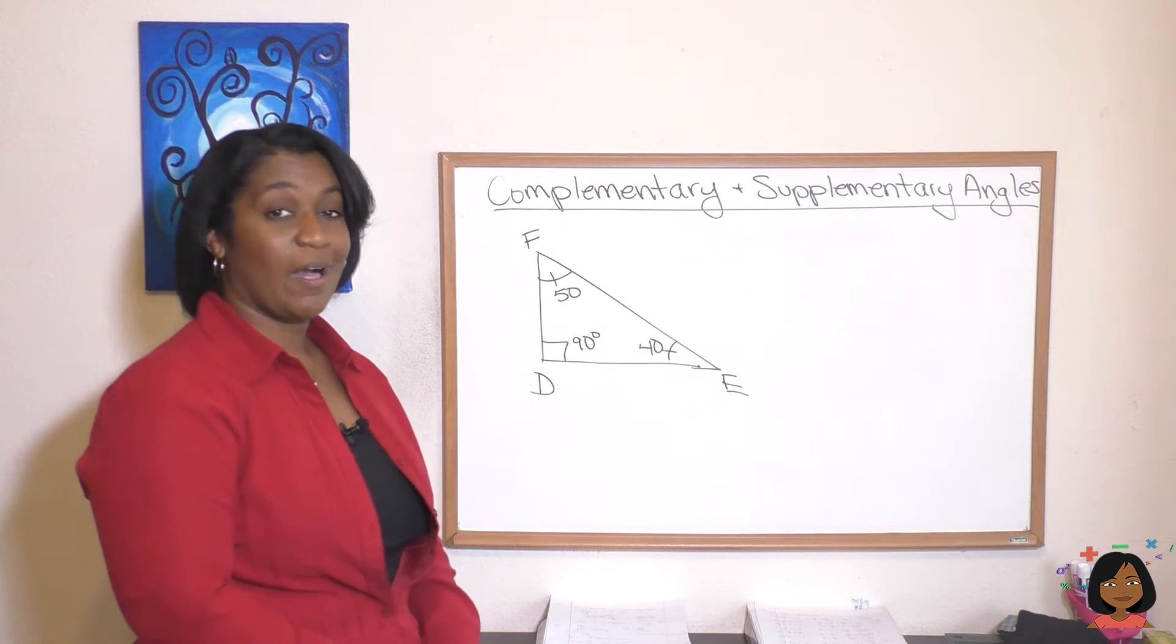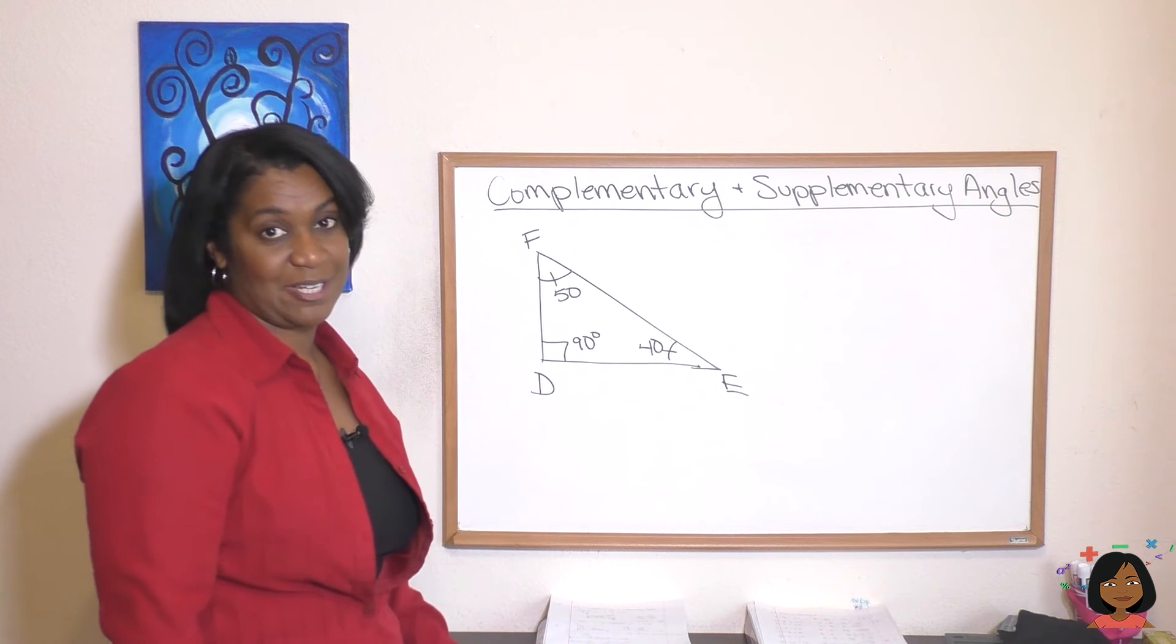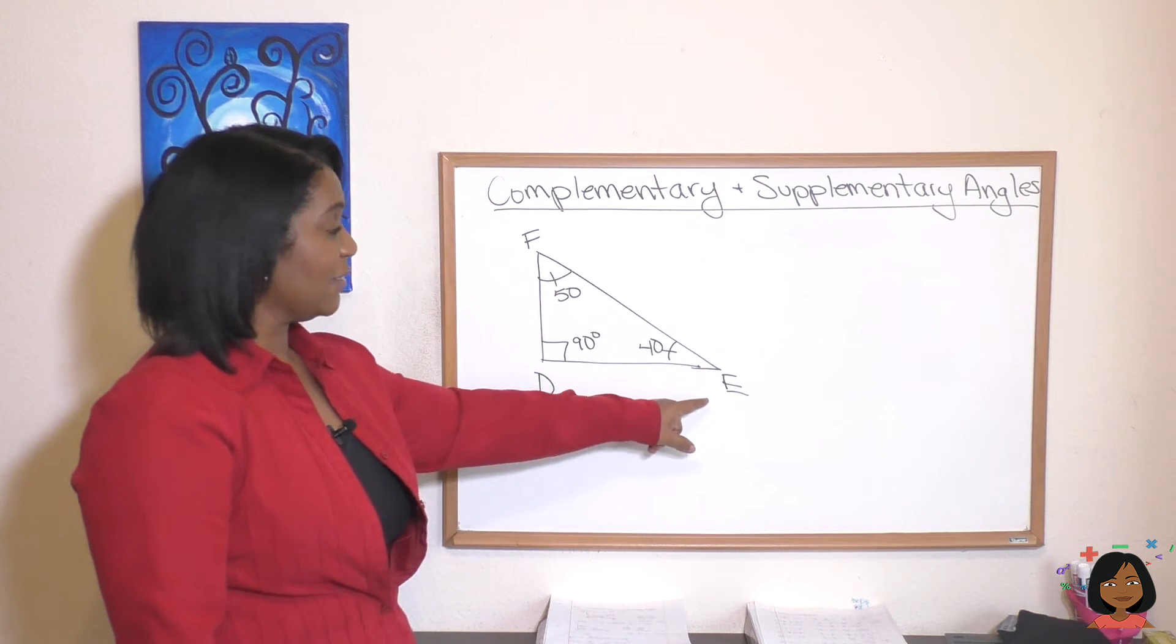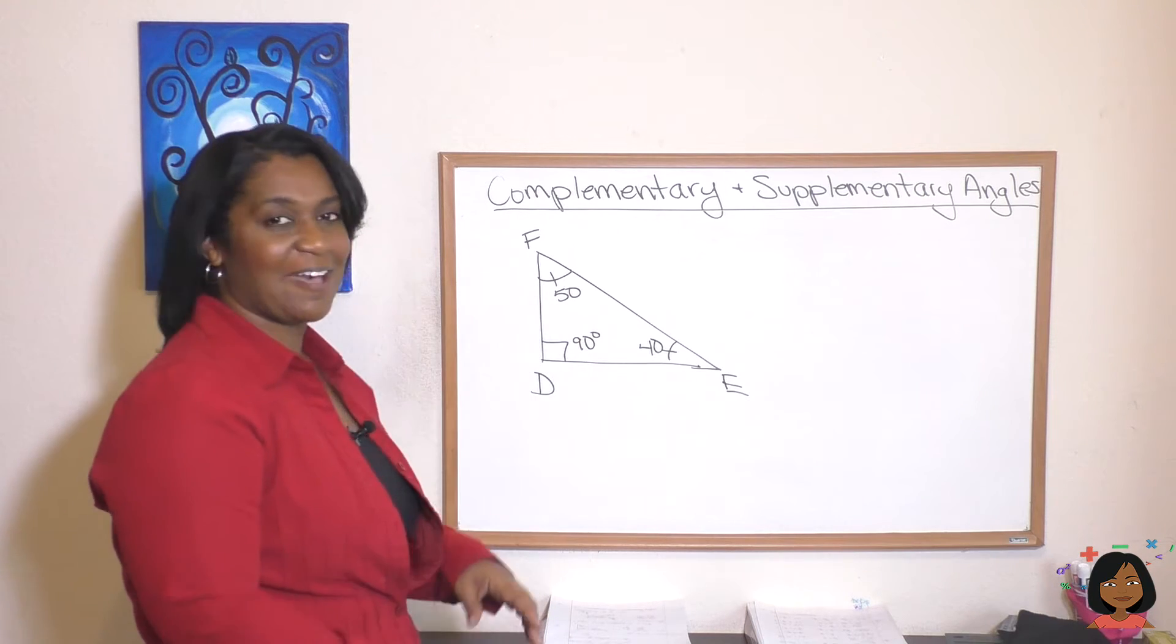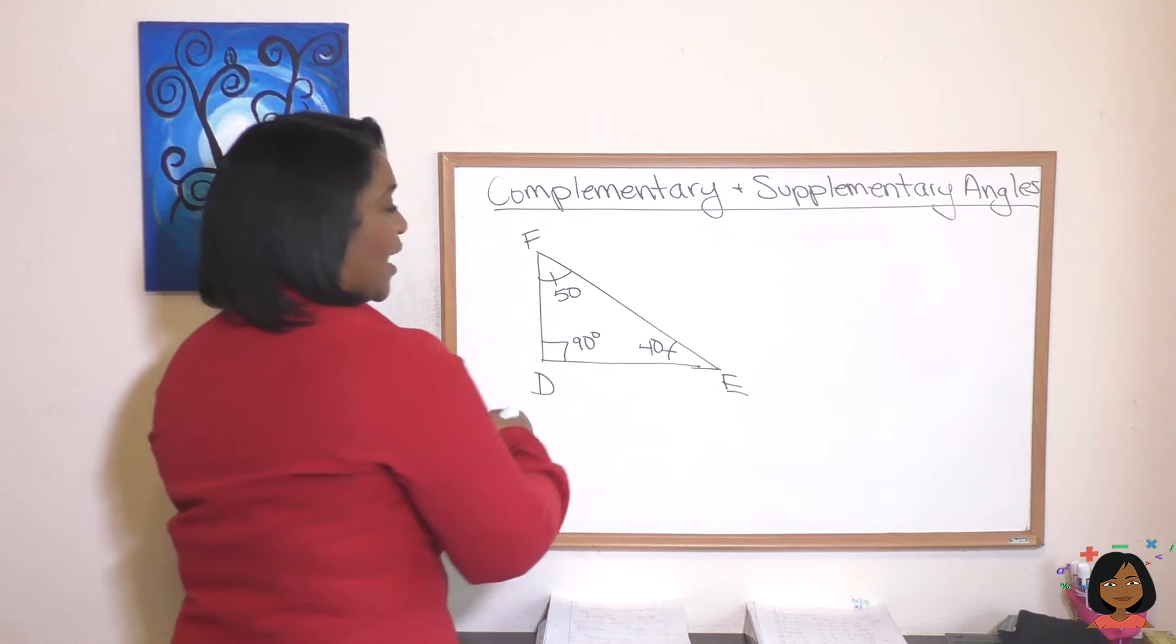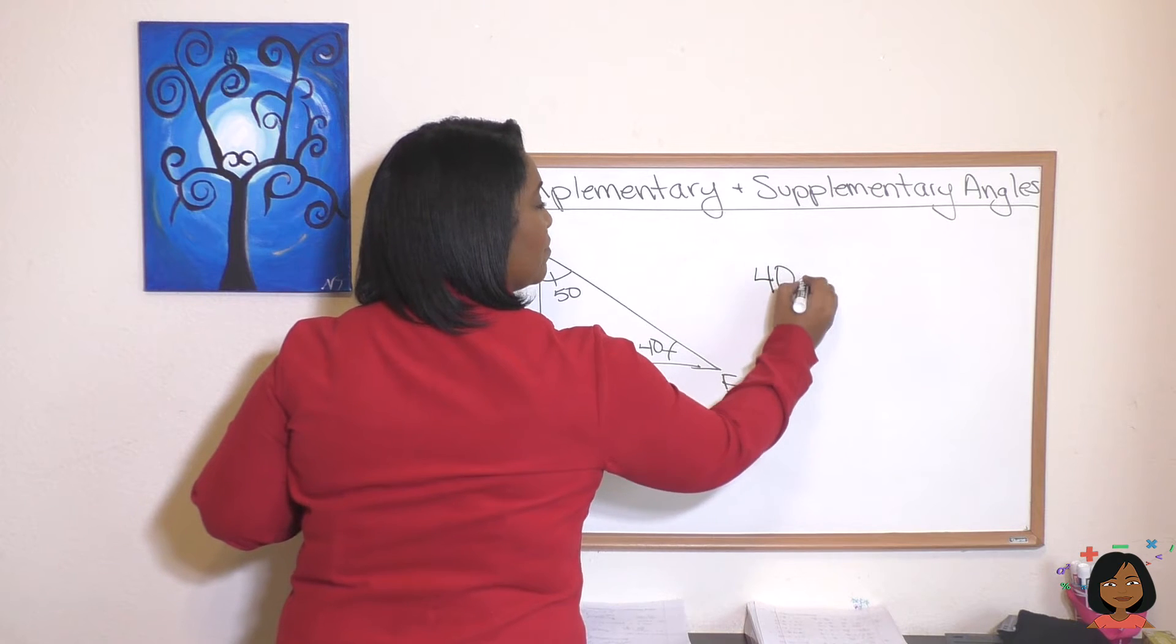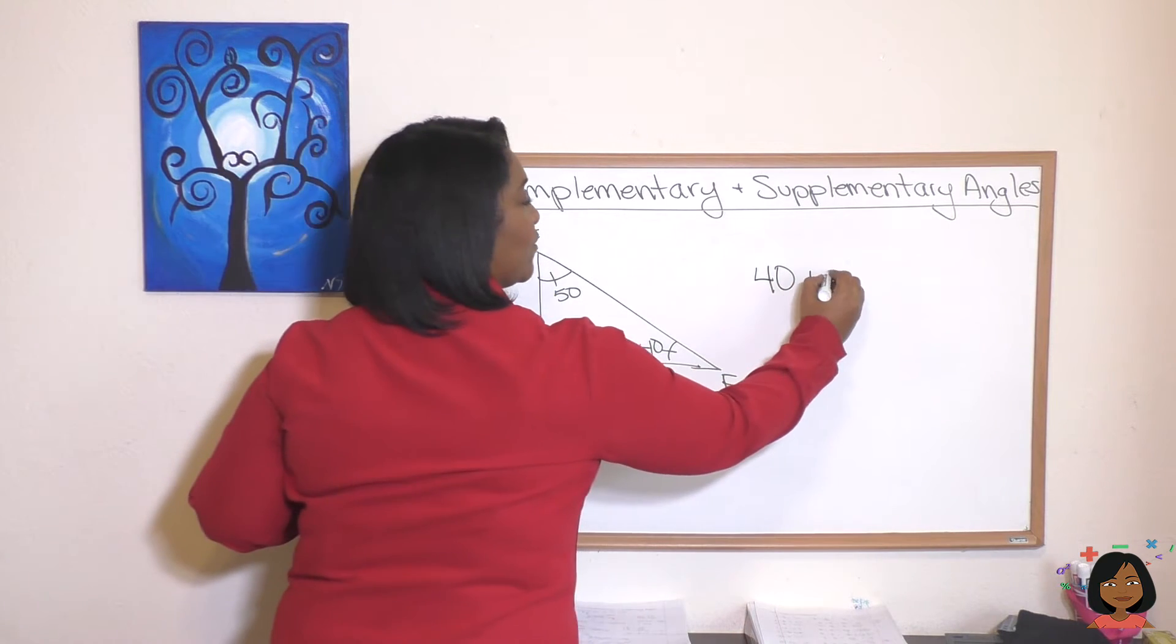Well, I told you that angle D is 90 degrees and that we've got an angle E and angle F. Yeah, I know you see it. Angle E and angle F add up to 90. Watch: angle E is 40 degrees, angle F is 50 degrees.